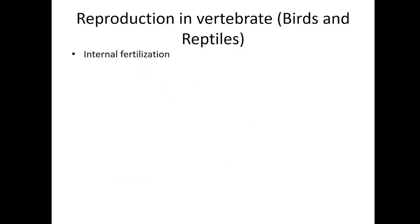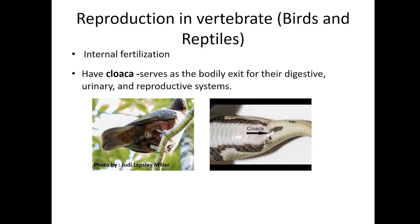Internal fertilization is mostly seen in reptiles and birds. Both reptiles and birds have an opening called a cloaca, a single exit and entrance for sperm, eggs, and waste. The male brings his sperm to the female's cloaca and the sperm fertilize the egg. The hard-shelled egg then develops within the female and eggs are usually laid in a nest. Bird eggs are similar to reptile eggs except they have a harder outer shell.